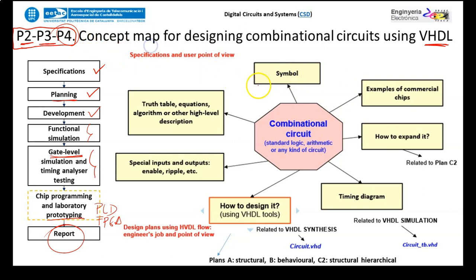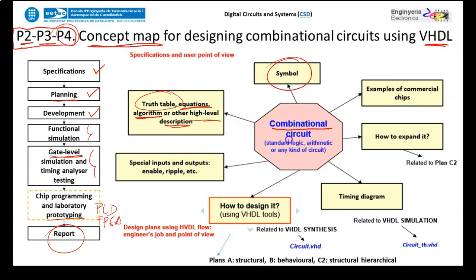The specifications will deal with concepts like the symbol and the truth table, along with the related equations, algorithms, or other high-level descriptions available to understand what the circuit has to do — that is, the functionality of the circuit. We will talk about combinational circuits: circuits that simply take an input and give you the output by means of solving the truth table.